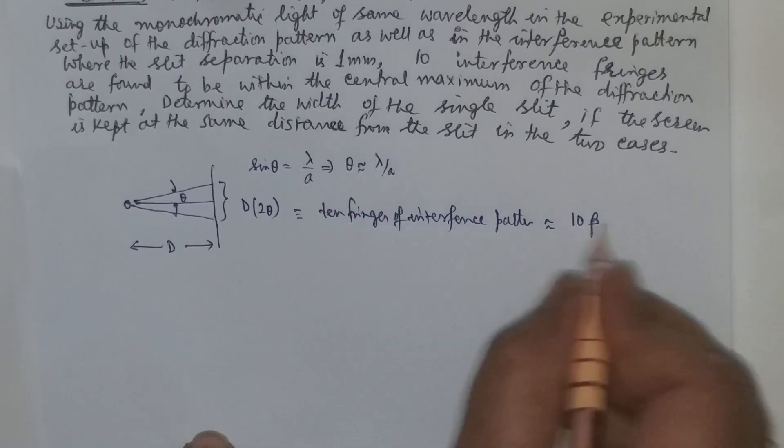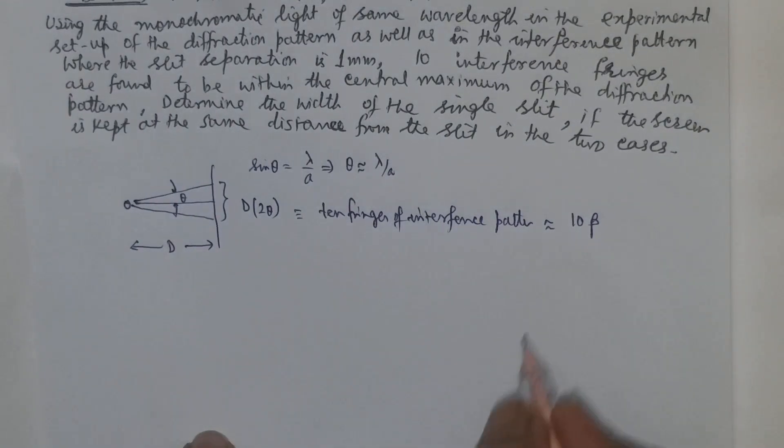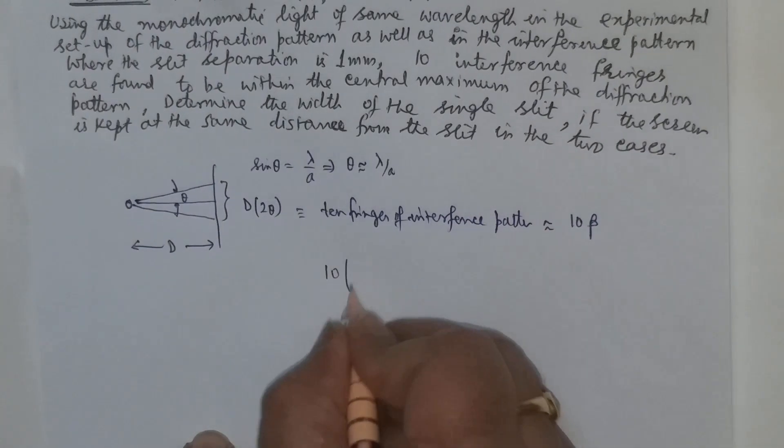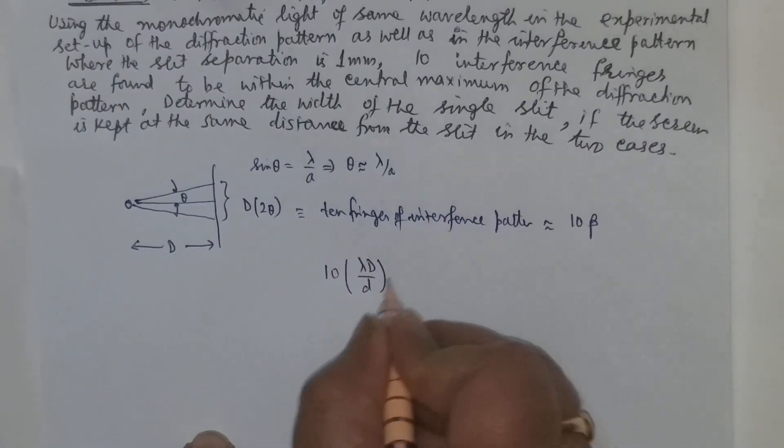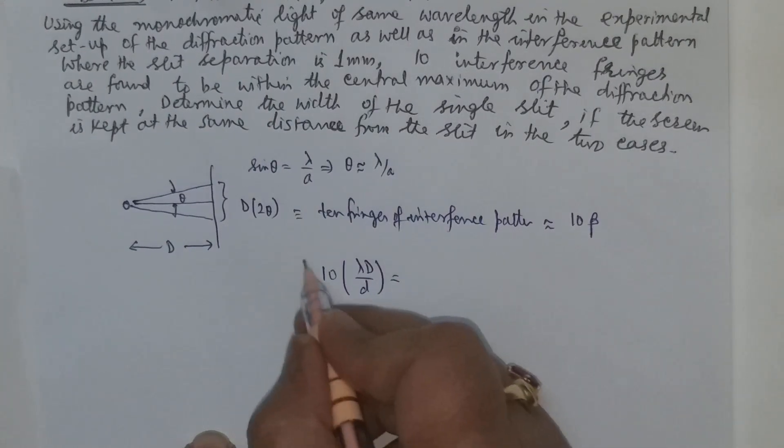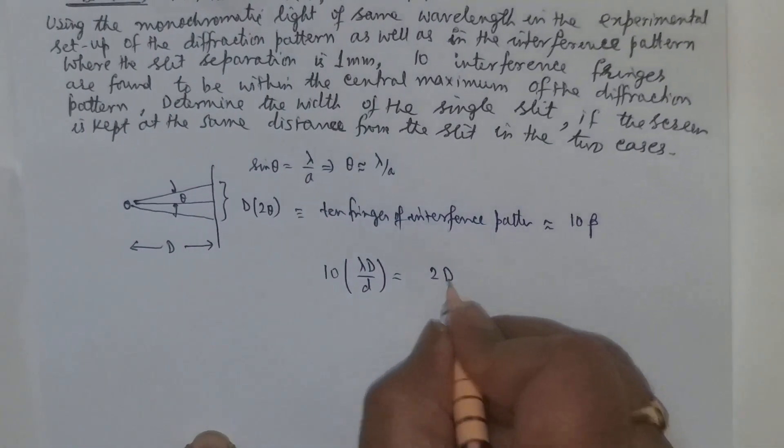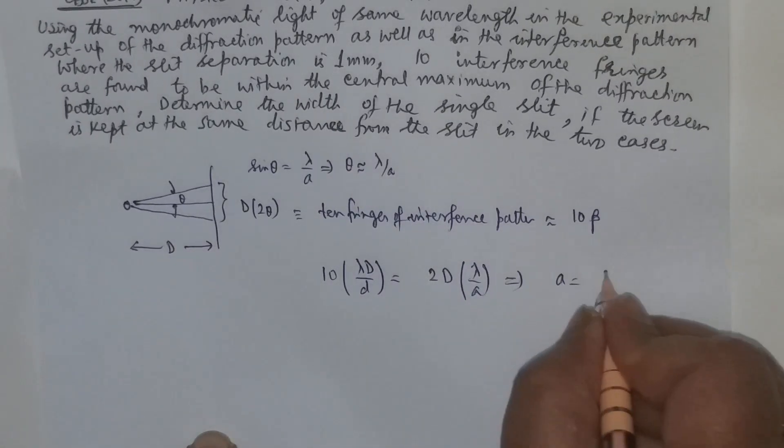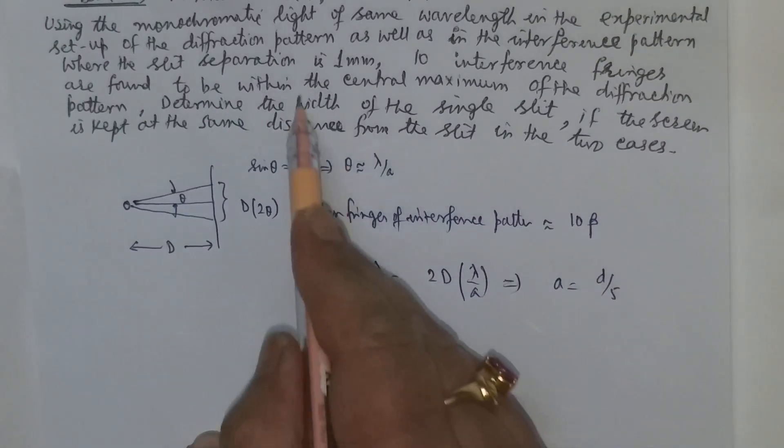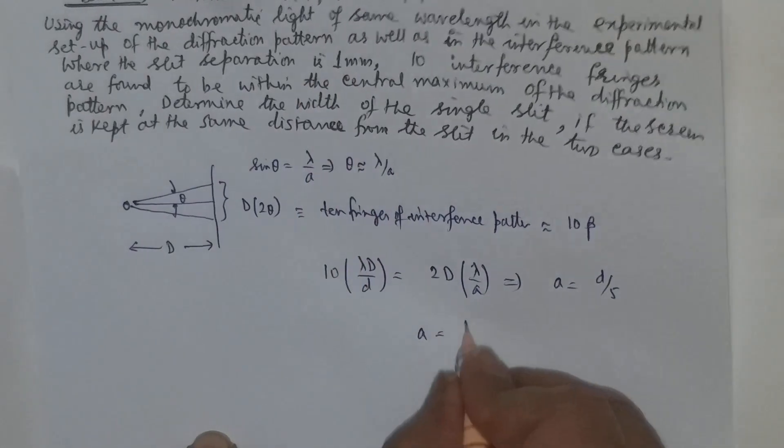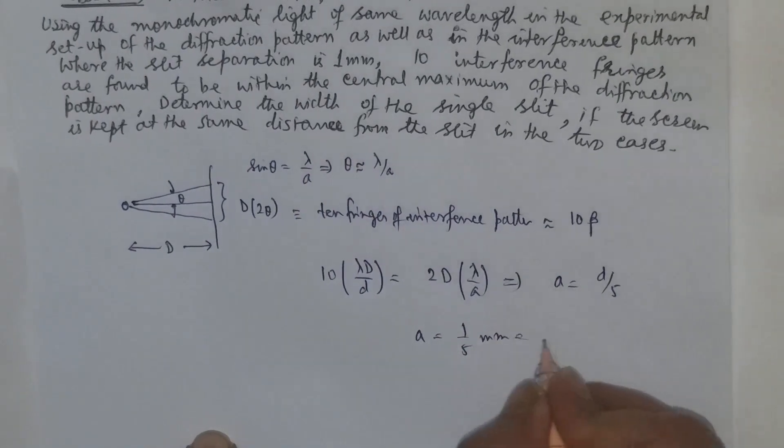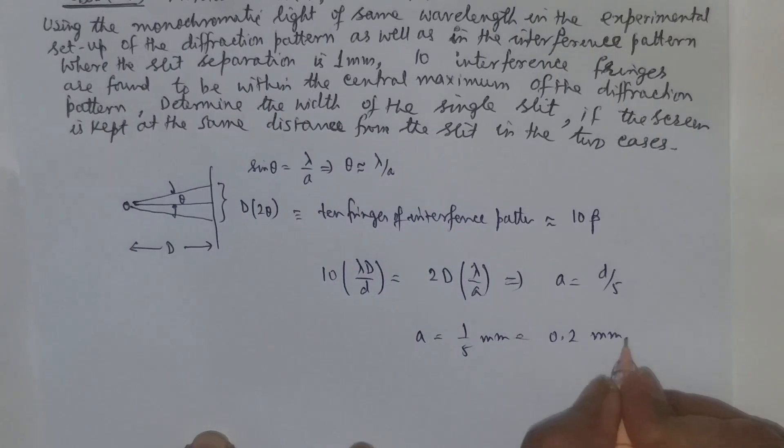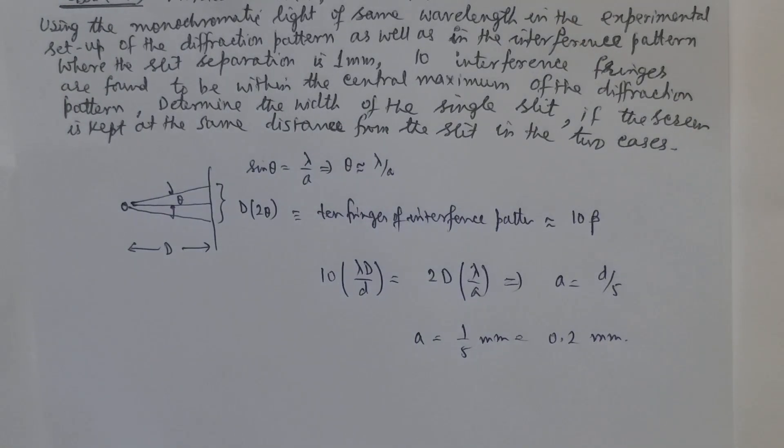d is same for both interference pattern experiment as well as the diffraction pattern. So therefore 10 times beta, beta is lambda capital D by small d, and this will be equal to 2d and theta is equal to lambda by a. From here a is equal to d by 5. d is the slit separation which is 1 millimeter. So 1 by 5 millimeter is nearly 0.2 millimeter. This is the size of the slit.